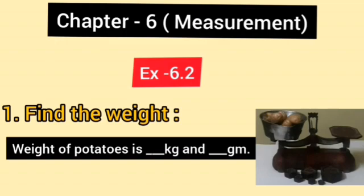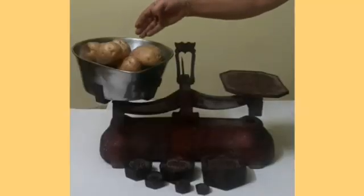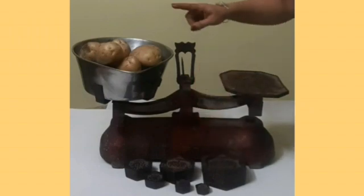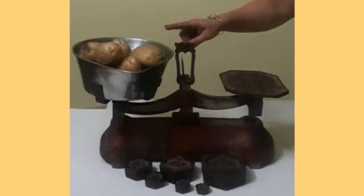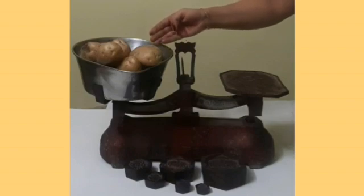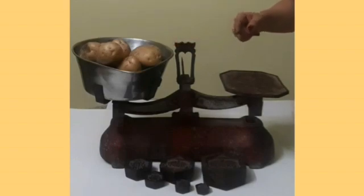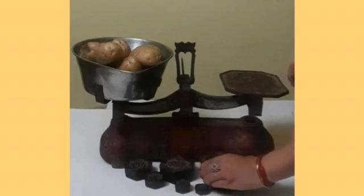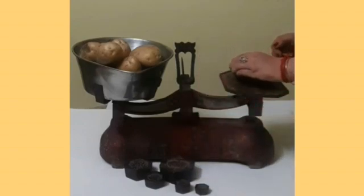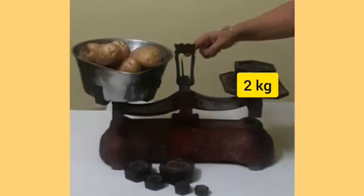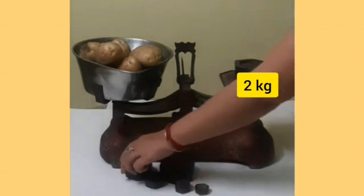Let's find out the weight of potatoes in kilograms and grams. Here are some potatoes and I have to measure their weight with the help of these standard weights. Please see the balance needle, which has tilted down towards the potato side — this means the weight is more at this side. But to know the exact weight of potatoes, both sides should be balanced. Now I will take 2 kg weight on the other side of the balance, but still both sides are not equal.